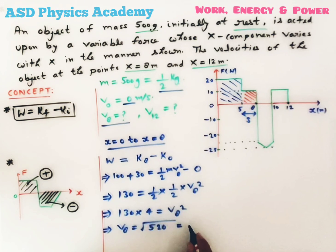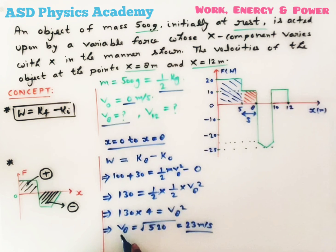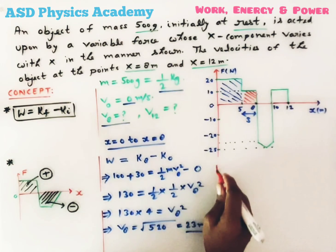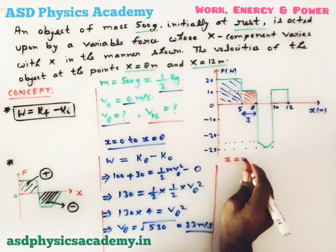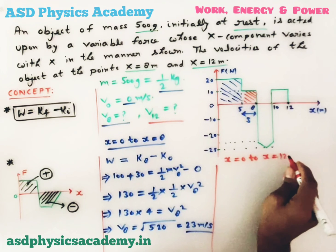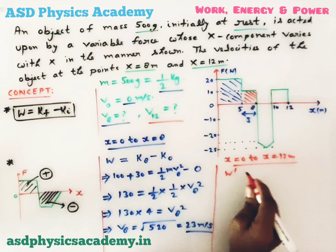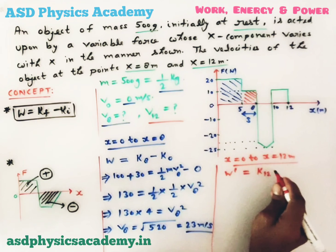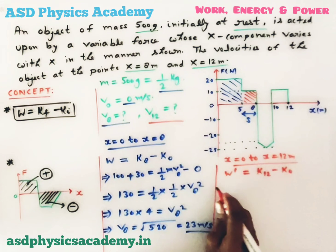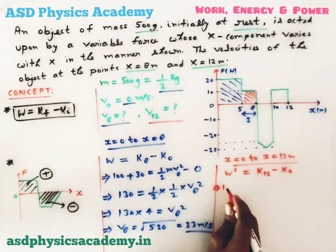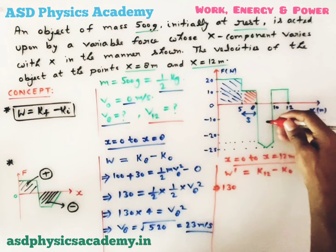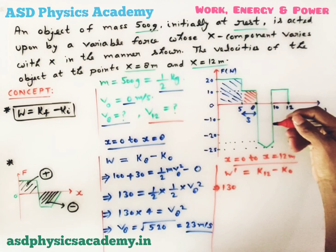The square root of 520 gives approximately 23 meters per second. So the velocity of the object at x equal to 8 meters is 23 meters per second. Now for the second part: velocity at x equal to 12 meters. We apply the Work-Kinetic Energy Theorem from x equal to 0 to x equal to 12 meters. Work done w-dash equals k12 minus k0. The work from 0 to 8 meters remains 130 joules.